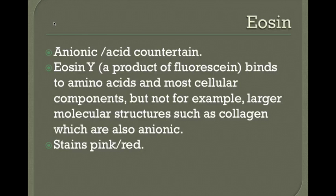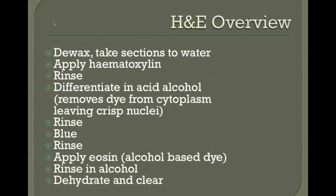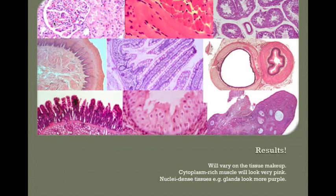Eosin is an anionic counter stain, most commonly used as eosin Y. Being anionic, it binds to positively charged compounds like amino acids and cytoplasm components, giving tissues a lovely pink wash. In the H&E protocol, you apply hematoxylin, rinse, differentiate to remove excess dye from the cytoplasm, blue in Scott's tap water, then apply eosin, rinse, and proceed through processing steps.